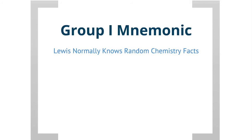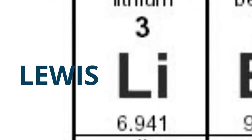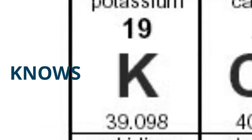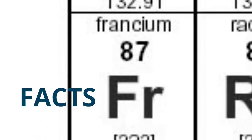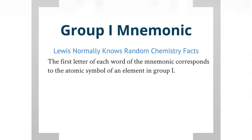To help remember the names and symbols for the elements, I came up with a mnemonic — a short phrase that helps remember what it refers to. For group 1, the mnemonic I'm going to use is: 'Lewis normally knows random chemistry facts.' The first letter of each word corresponds to the atomic symbol of an element in group 1. So if you can remember the mnemonic, you can easily remember the atomic symbols.